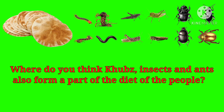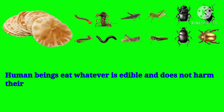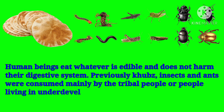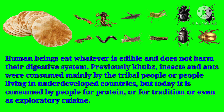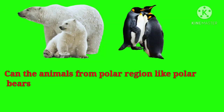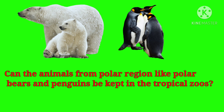The fifth question is: Where do you think cooked insects and ants also form a part of the diet of the people? Human beings eat whatever is edible and does not harm the digestive system. Previously, cooked insects and ants were consumed mainly by tribal people or people living in underdeveloped countries, but today they are consumed for protein, for tradition, or even as exploratory cuisine.